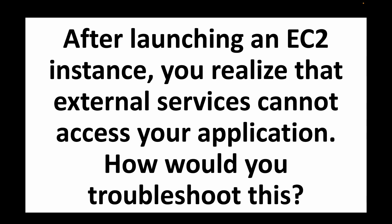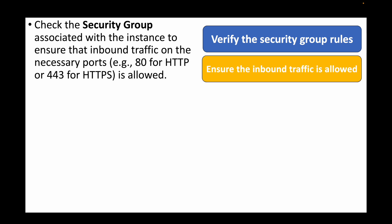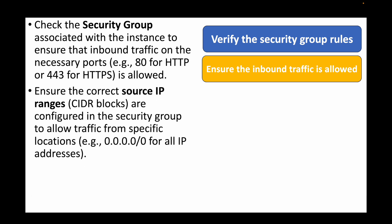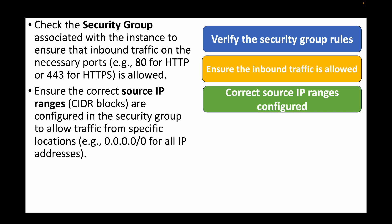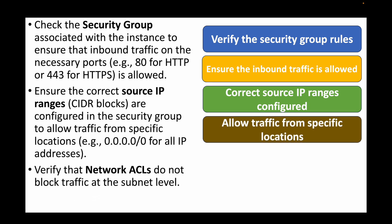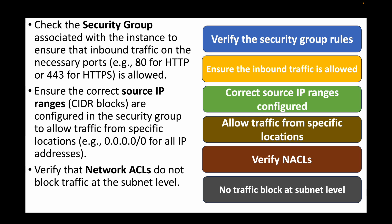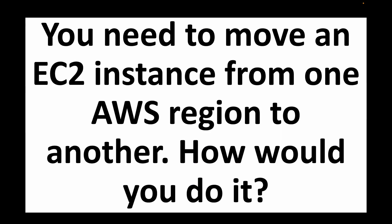The next question: after launching an EC2 instance you realize external services cannot access your application — how would you troubleshoot this? We need to check the security groups to verify whether inbound traffic is allowed on the required port numbers. We need to ensure the correct source IP addresses and CIDR blocks are defined in the security group. We also need to verify the NACLs to make sure we are not blocking any traffic at the subnet level — basically check all firewalls to ensure necessary traffic from external applications is allowed.